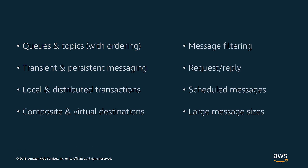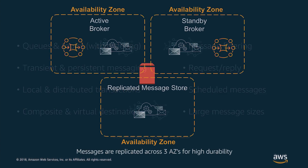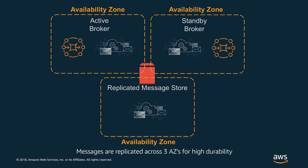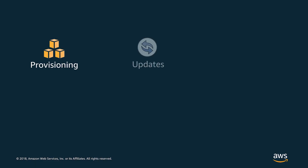With Amazon MQ, the underlying infrastructure is automatically provisioned for high availability and message durability to support the reliability of your applications. Because it's a managed service, Amazon MQ automates the time-consuming tasks of operating message brokers and reduces operational overhead, including provisioning.